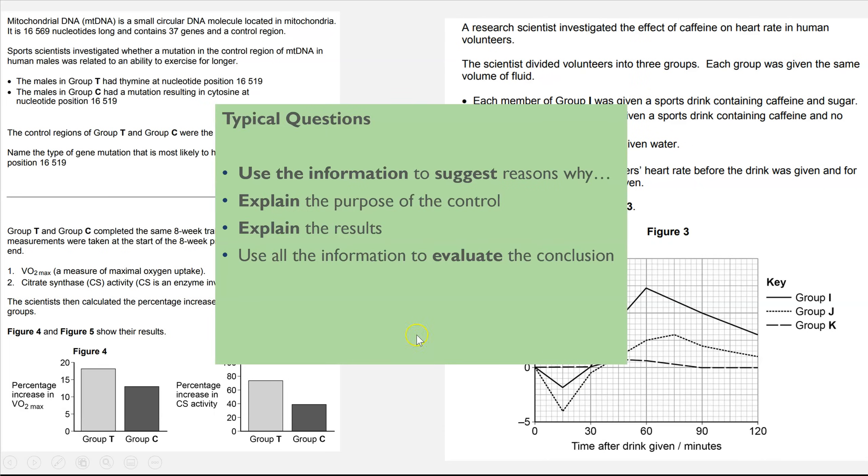And the types of questions that come up with this could be using the information to suggest reasons why. And that could be using the information in terms of the method to suggest why they used a particular control group or why they used a particular piece of equipment. Or it could be suggesting reasons why for the results, which also links to this point here, explain the results. You often get questions linked to the control experiment as well, which would be when you have an additional group set up who aren't being given, for example over here, caffeine. They're not being given the active ingredient, which is caffeine, so you're then just looking at the results to see or to compare the effect of the independent variable.